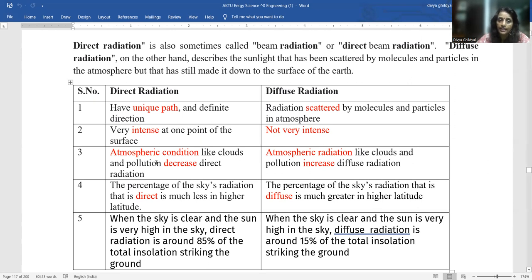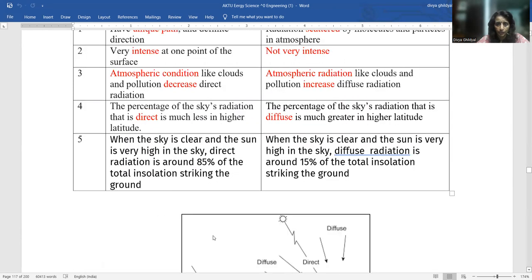Atmospheric conditions like clouds, pollution, etc. do manage to decrease my direct radiation, but atmospheric conditions like clouds, pollution, etc. increase more of my diffuse radiation. The percentage of the sky's radiation that is direct is much lesser in higher latitude. The percentage that is diffused is much greater in higher latitude.